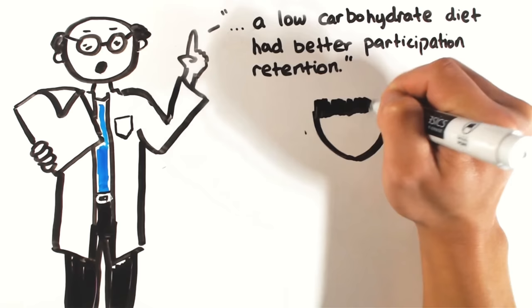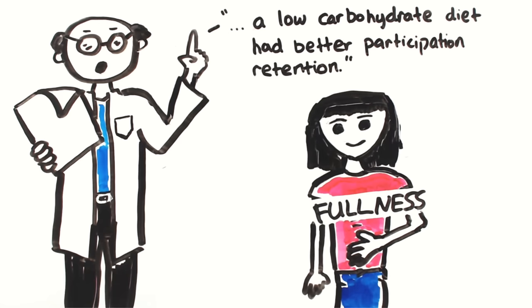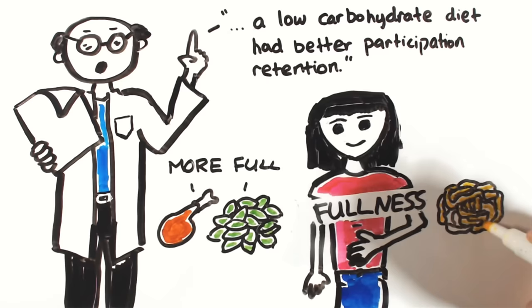This is because, with so much more fat and protein dense foods, your satiety, or fullness level, goes up much faster. A 200 calorie chicken breast, or 200 calories worth of green leafy vegetables, will make you feel more full than say a 200 calorie carb heavy pasta.